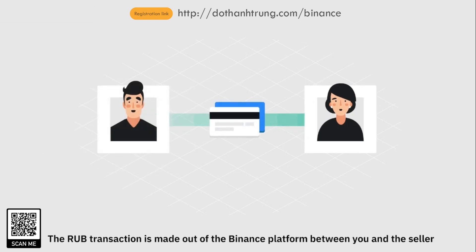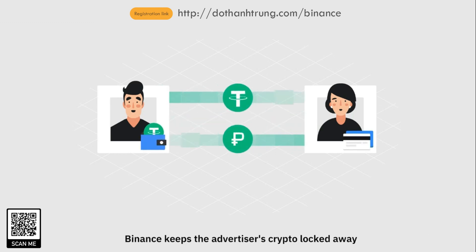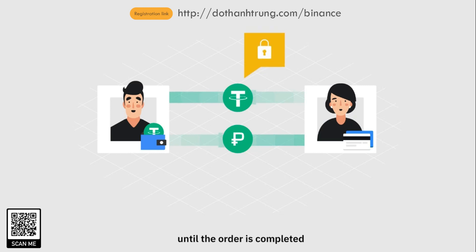The RUB transaction is made outside the Binance platform, directly between you and the seller. From when you make an order, Binance keeps the advertiser's crypto locked away until the order is completed, so you can transfer funds worry-free.